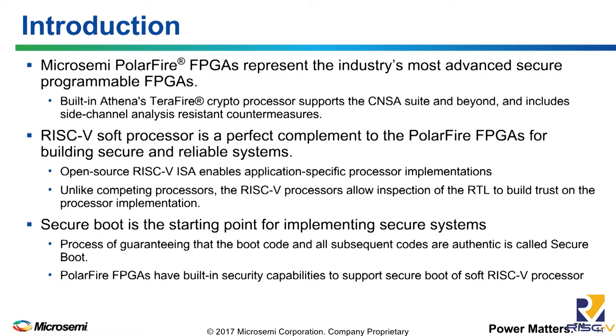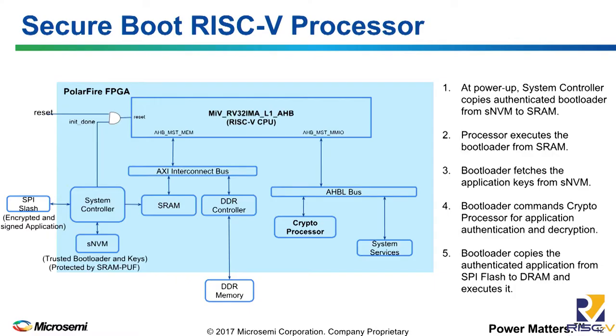This crypto co-processor acts as a look-aside accelerator. We believe the RISC-V soft processor is a perfect companion for this on-chip crypto processor, because unlike competing processors, the RISC-V processor RTL can be inspected for building trust in the implementation. For any secure system, secure boot is the starting point — it guarantees that boot code and all subsequent code are authentic. I have a demo showing how a RISC-V processor interfaces with the on-chip crypto processor and boots securely on PolarFire FPGAs.